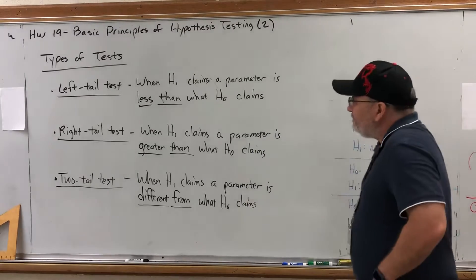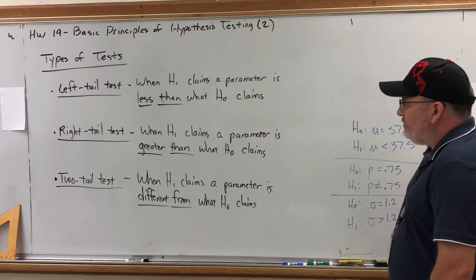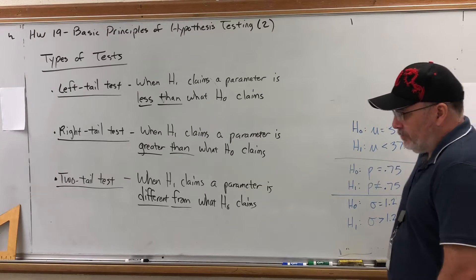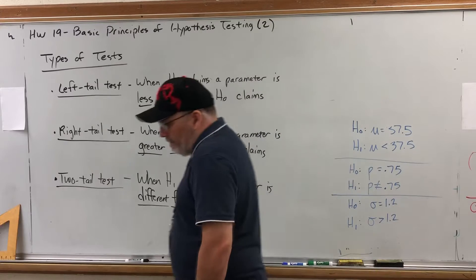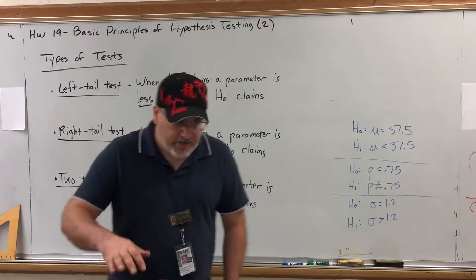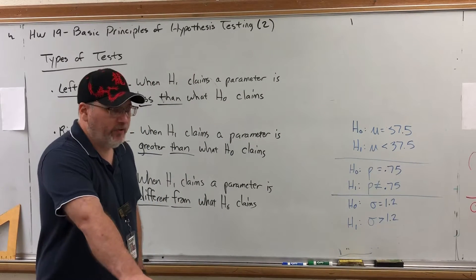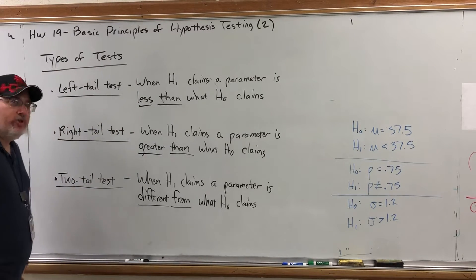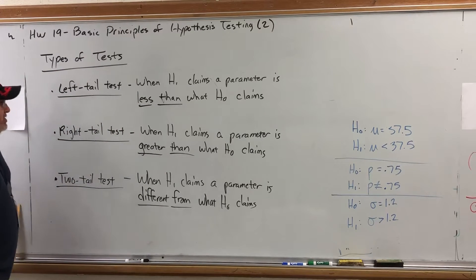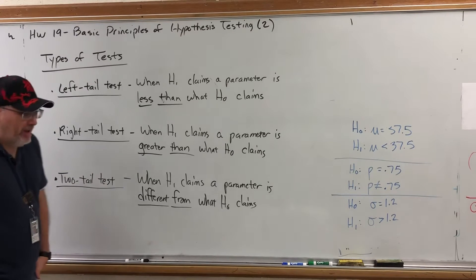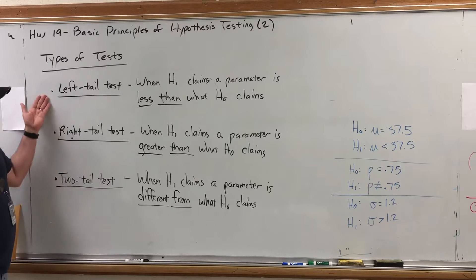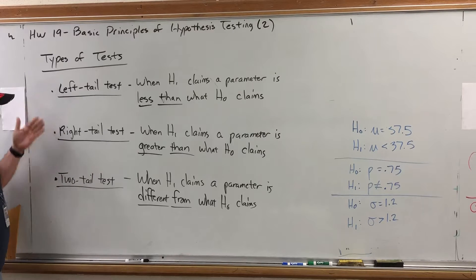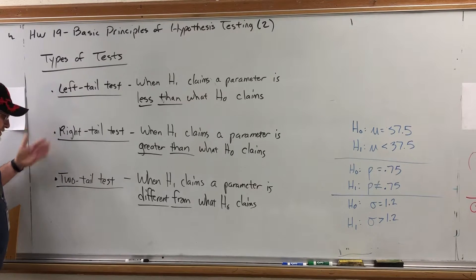There are three types of tests we're going to run across. A hypothesis test will always follow the same steps, and one of those steps requires you to make a decision based on the type of test it is. The three types are: a left tail test, a right tail test, and a two tail test.